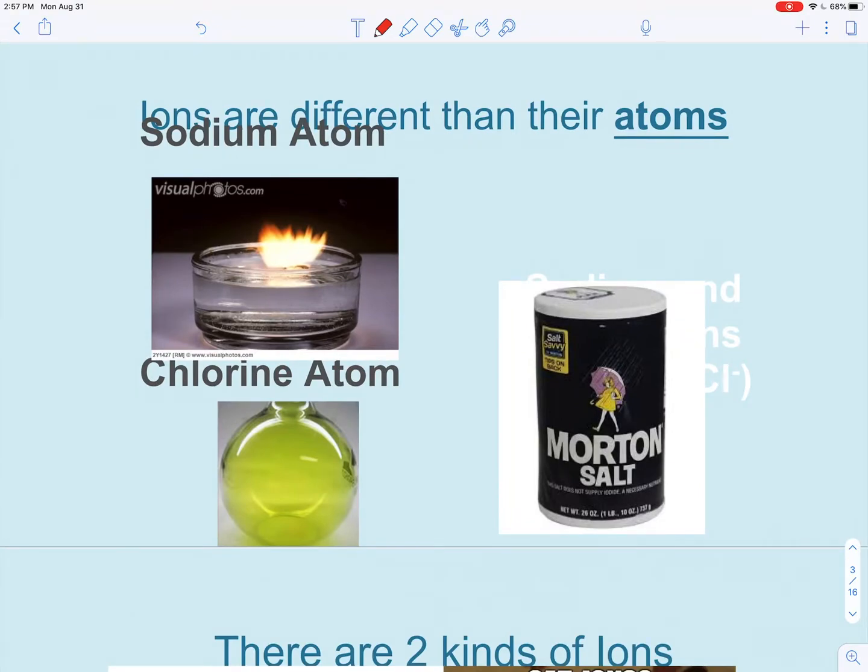Ions are different than their atoms. If we look at a sodium atom, it reacts violently. It kind of explodes in water. A chlorine atom is a toxic gas. But when we combine these together into sodium chloride, these are two different ions that are completely safe to eat. So atoms are different than their ions. A sodium ion is safe to eat, but a sodium atom could explode in your mouth.